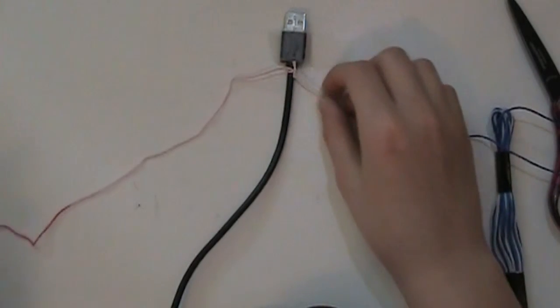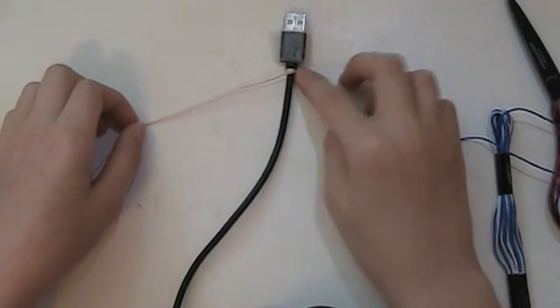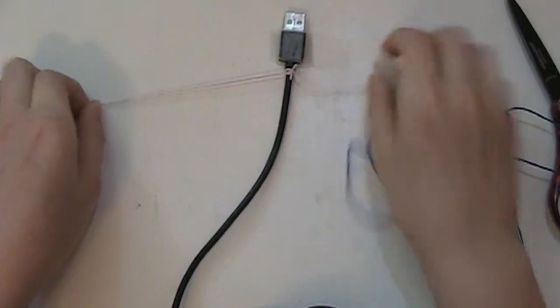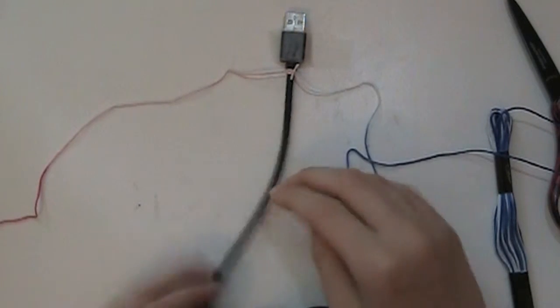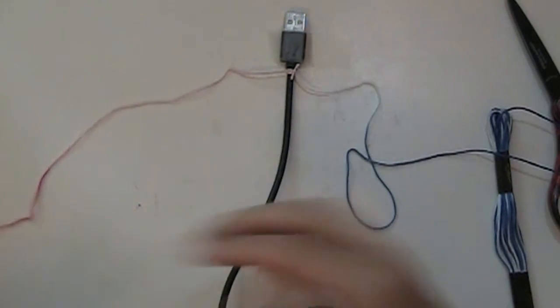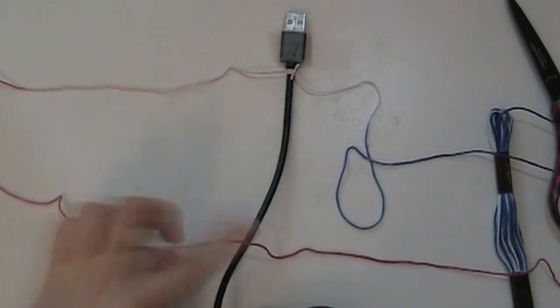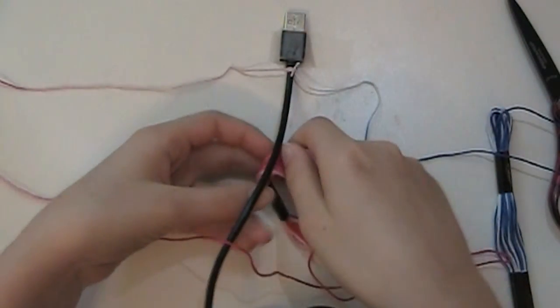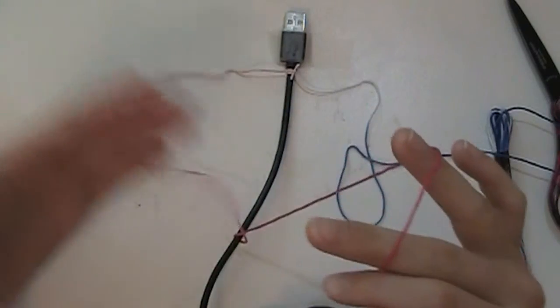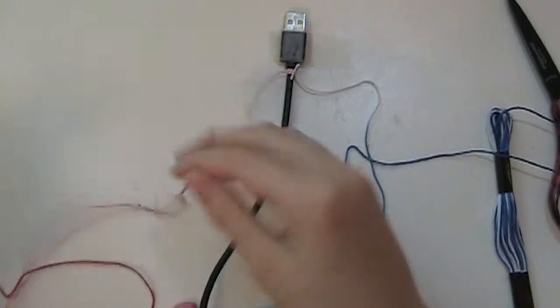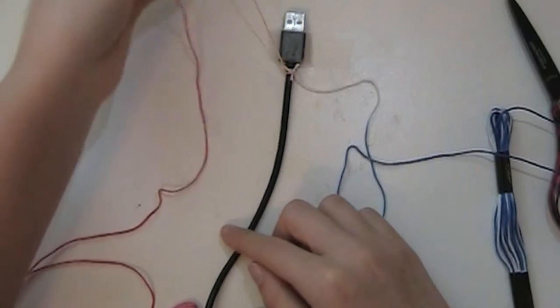Now we're going to start making knots. Again, the middle of the cord right here is sort of our middle strand. I'm going to start with the left end. I've gotten out some string. I'm going to go over the middle and back under it, so that I go through this loop. Then I'm going to pull it up to the top.